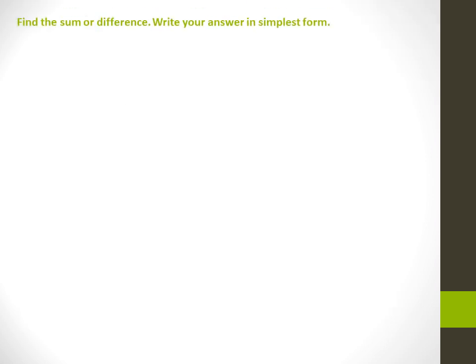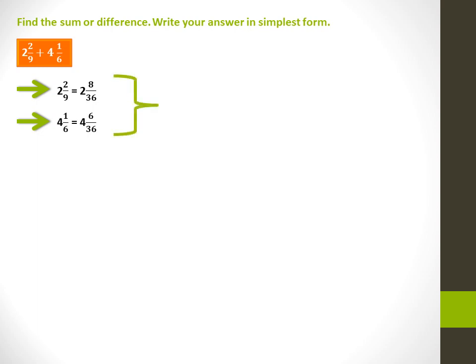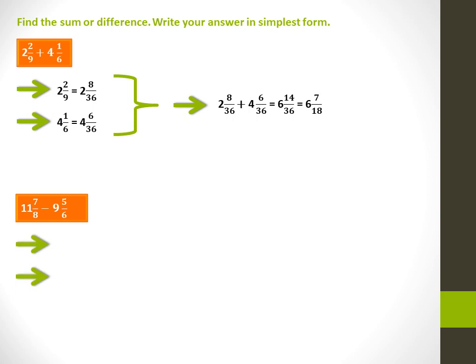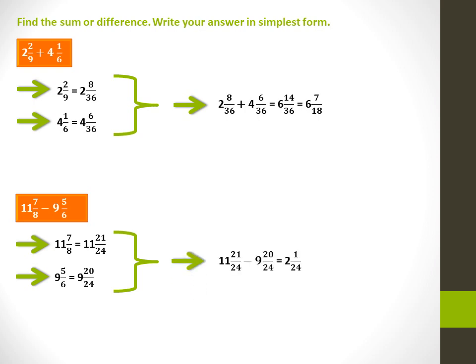Find the sum or difference and write your answer in simplest form. 2 2 over 9 plus 4 1 over 6: their common denominator is 36. 2 2 over 9 is equal to 2 8 over 36, and 4 1 over 6 is equal to 4 6 over 36. Their sum is 6 14 over 36, which equals 6 7 over 18 in simplest form. 11 7 over 8 minus 9 5 over 6: their common denominator is 24. 11 7 over 8 is equal to 11 21 over 24, and 9 5 over 6 is equal to 9 20 over 24. Their difference is 2 1 over 24.